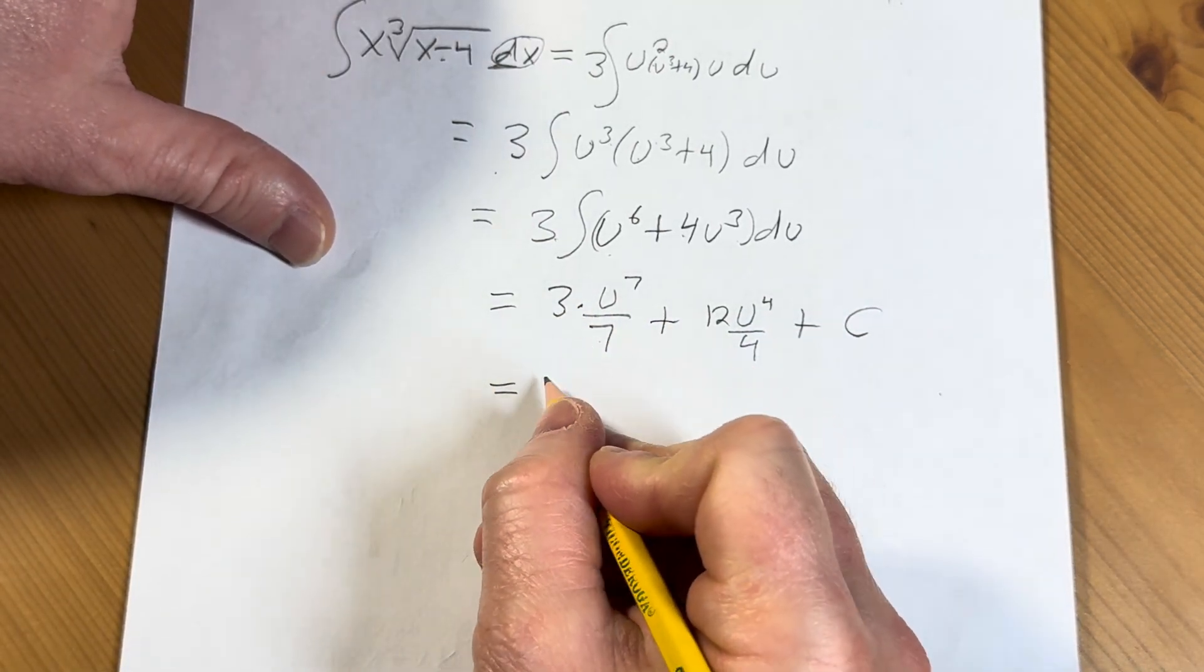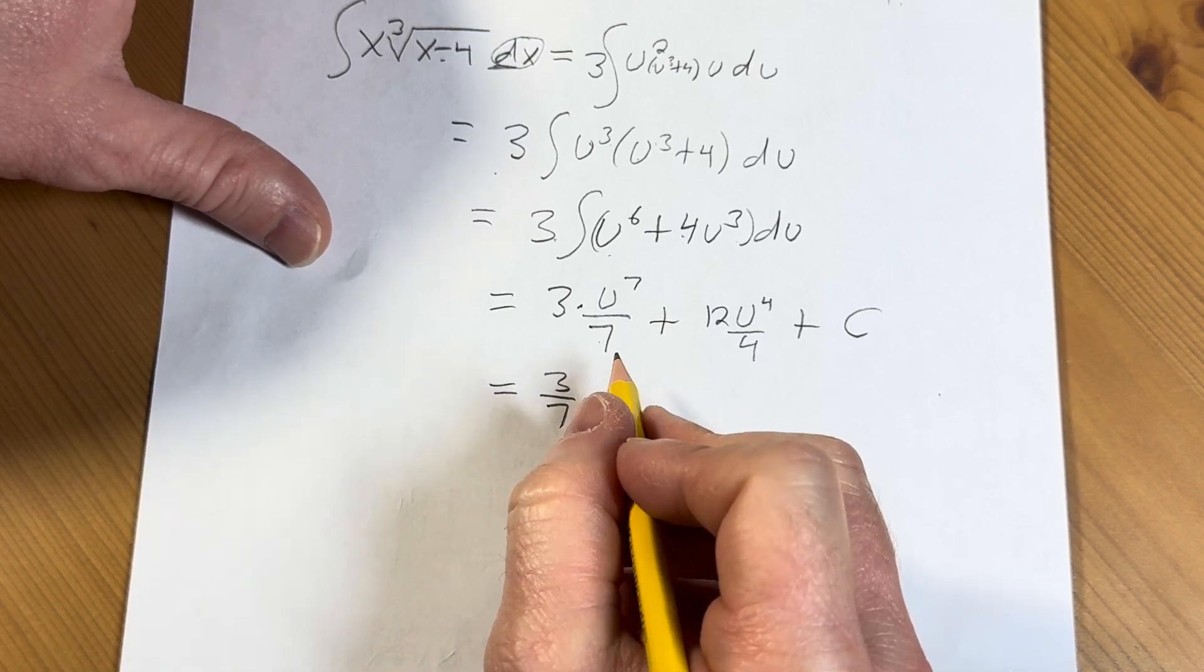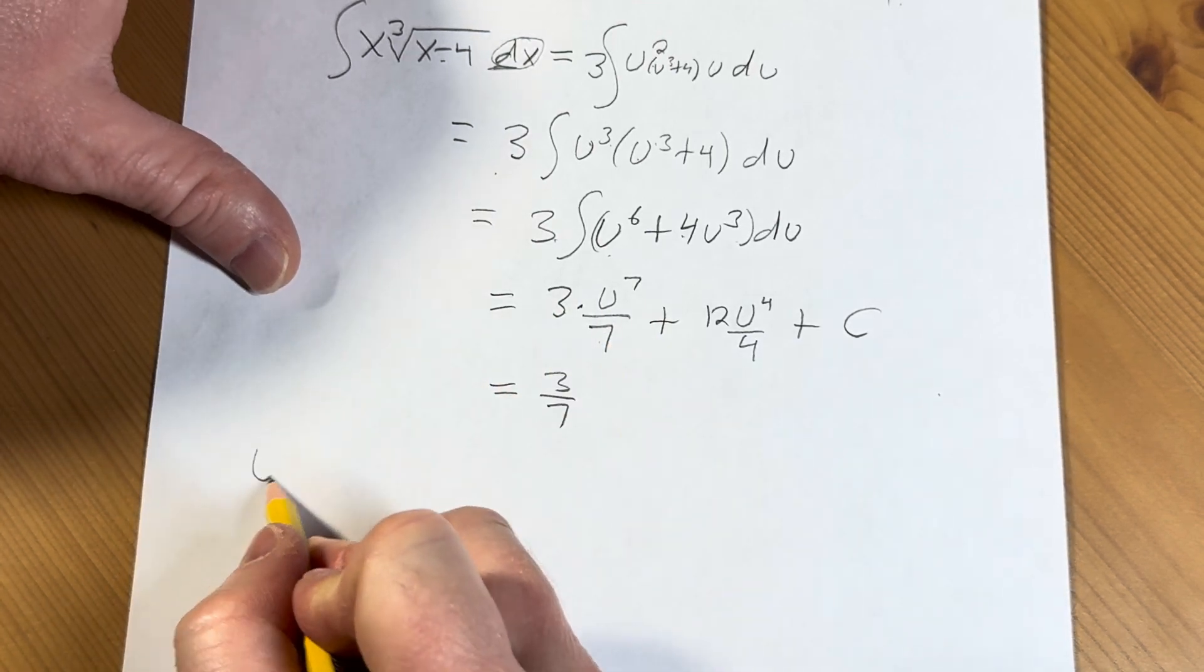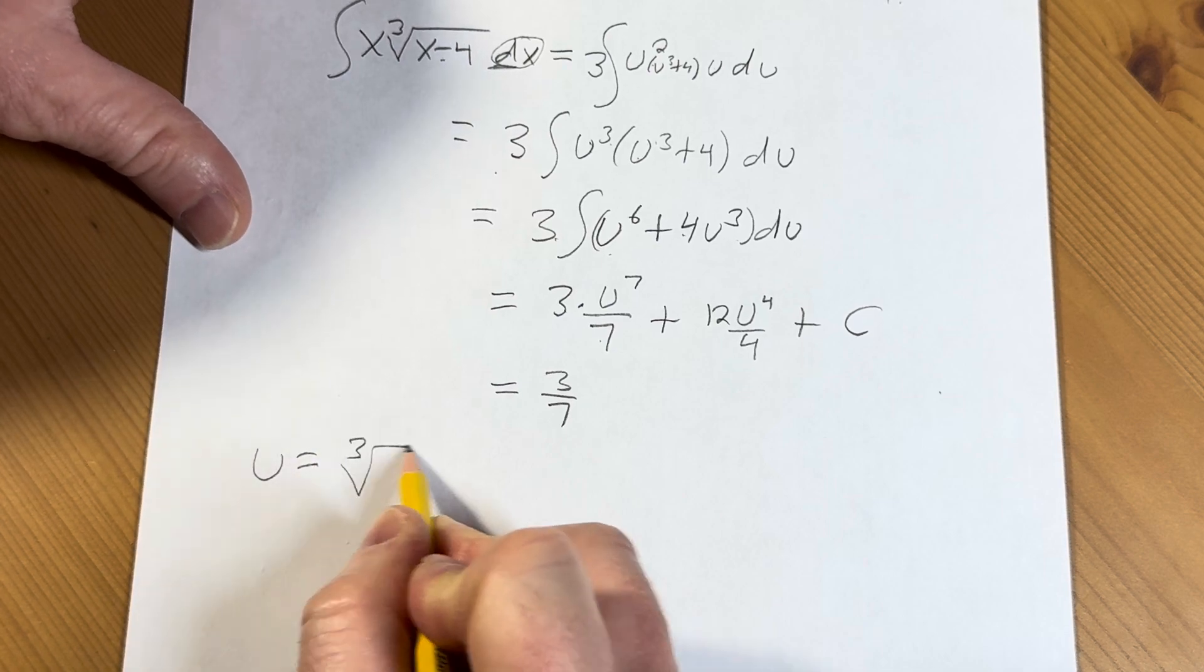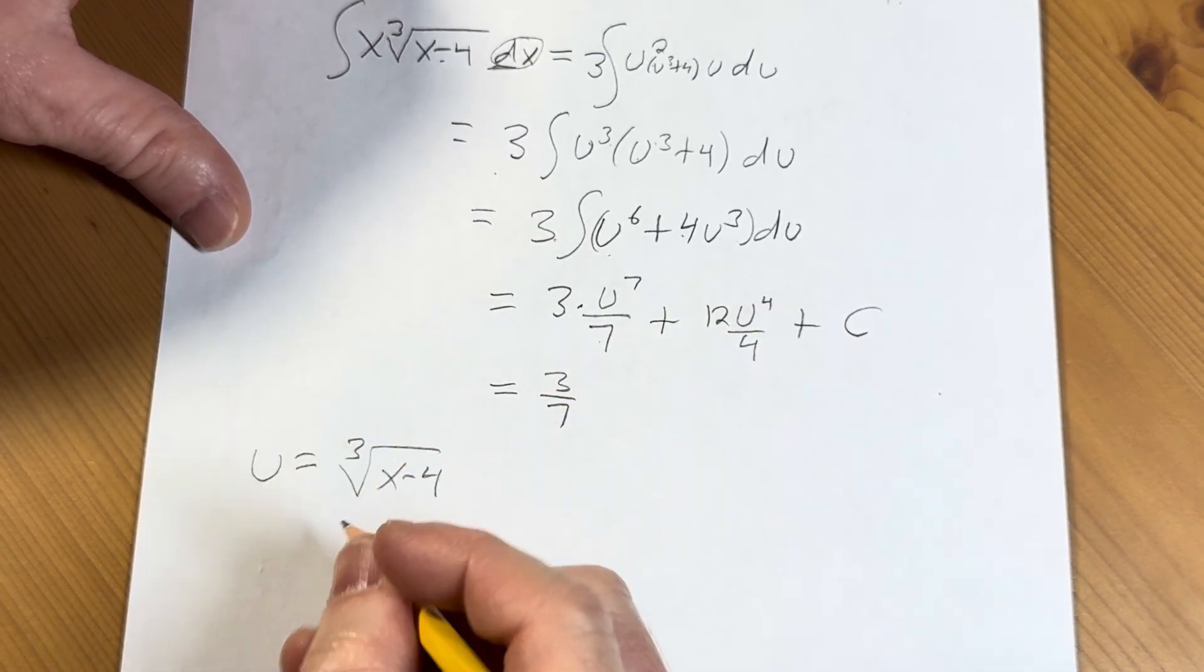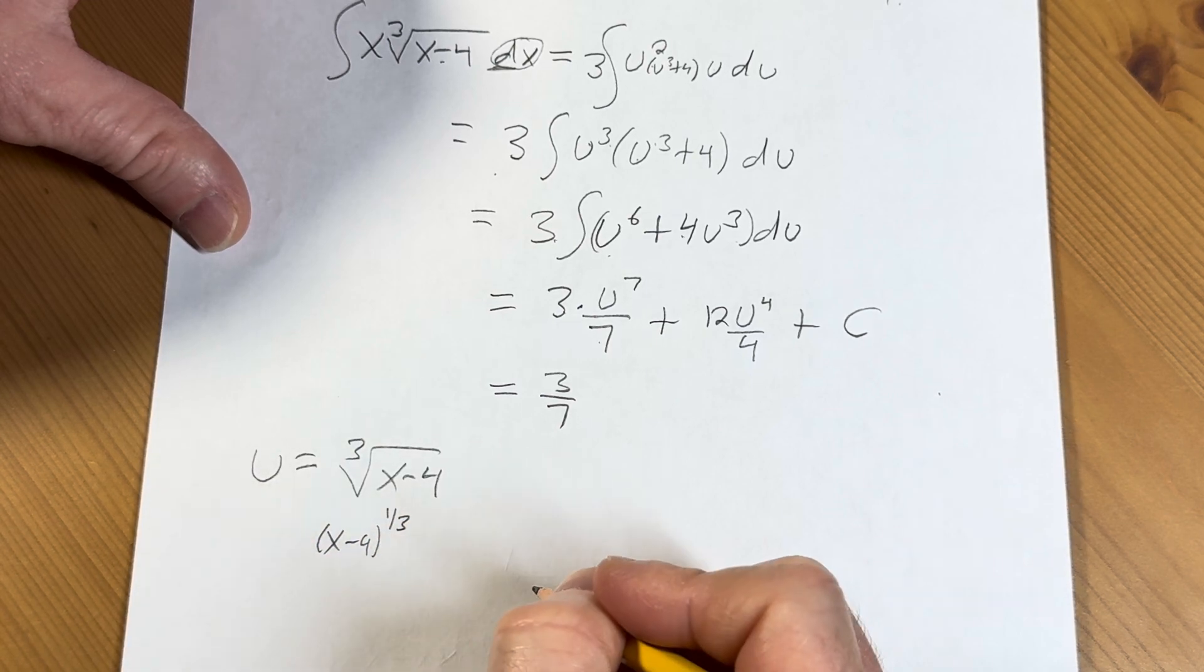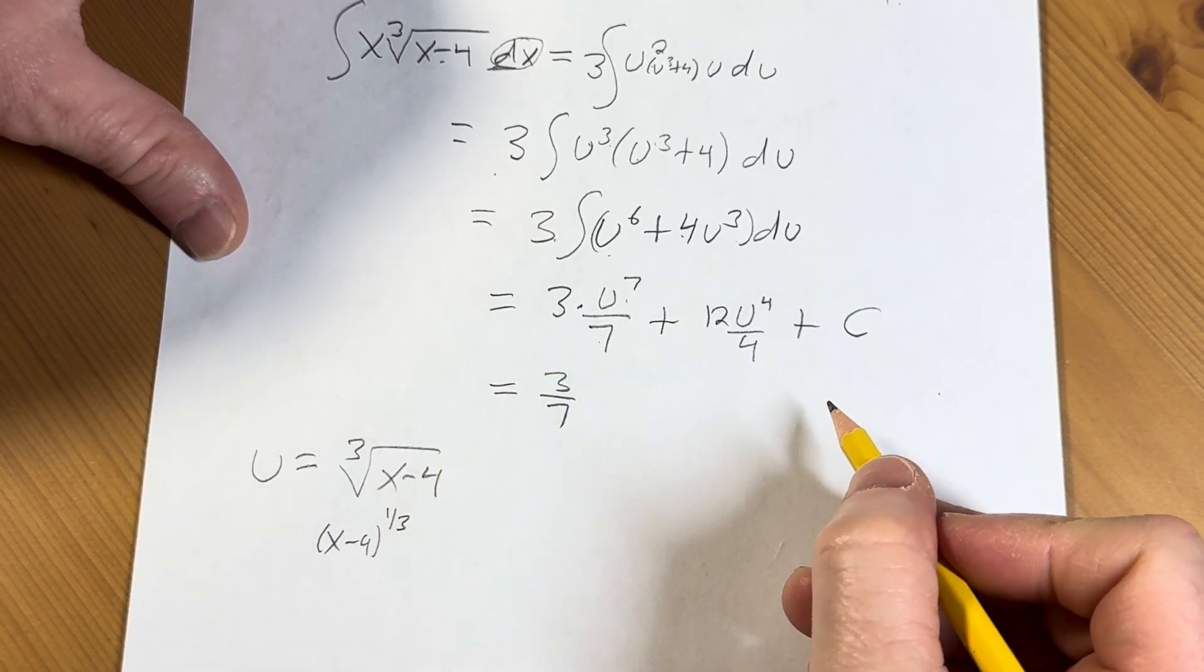So this is equal to 3 over 7. Recall that u, what is u? Let's think about what u is. U was the cube root of x minus 4. So this is going to be, think of it as x minus 4 to the 1/3rd, like that.